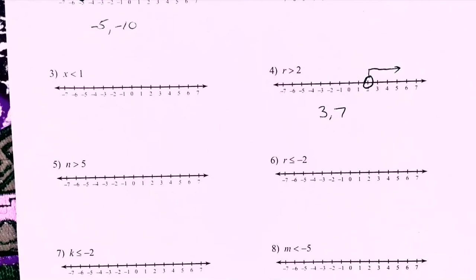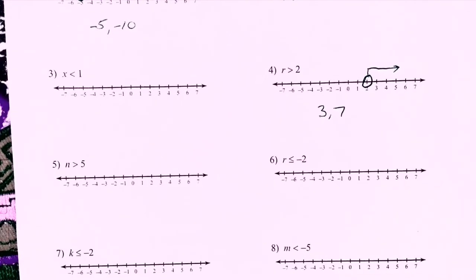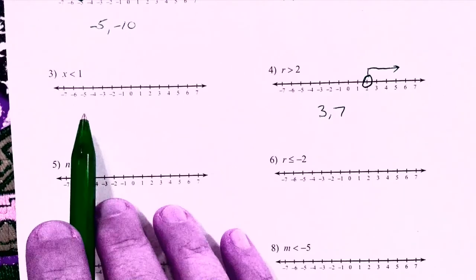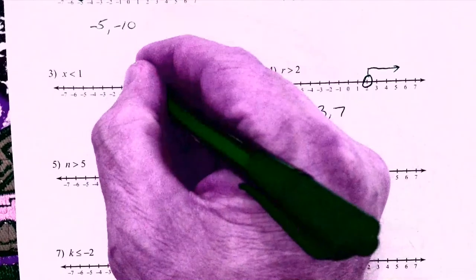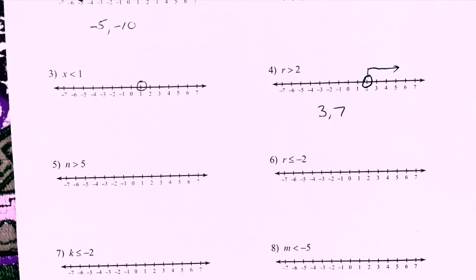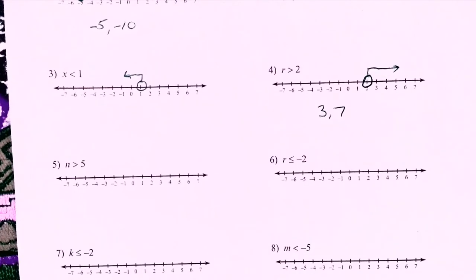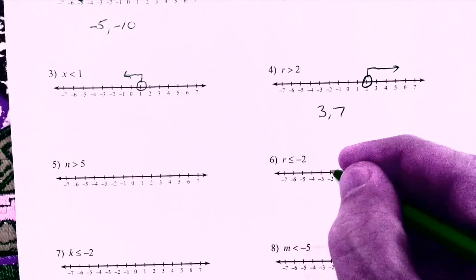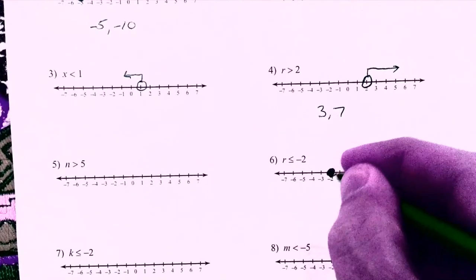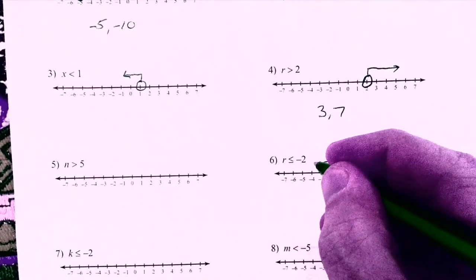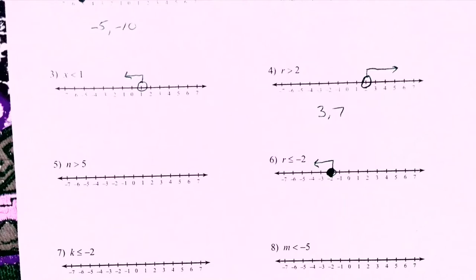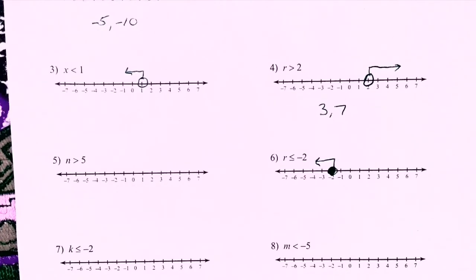Let's do numbers three and six. Number three: just numbers that are less than one. I go to one, put a hollow dot, and go up and to the left — hollow because it doesn't include one. Number six: these are numbers that are less than or equal to negative two, so negative three, negative four, and also negative two itself. I go to negative two, put a solid dot because it's less than or equal to, and draw the line to the left — negative three, negative four, negative five, negative six.